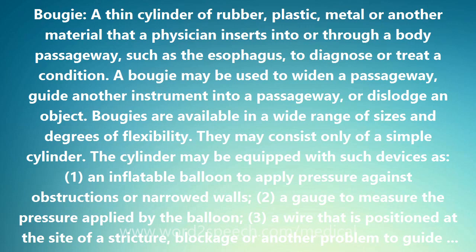3, a wire that is positioned at the site of a stricture, blockage, or another problem to guide other instruments into the passageway; 4, a channel through which dye can be injected so that a site can be identified on a fluoroscope; and 5, a light to illuminate a passageway for examination.